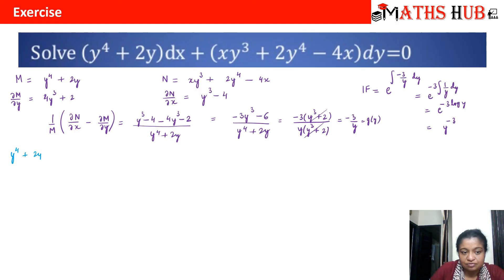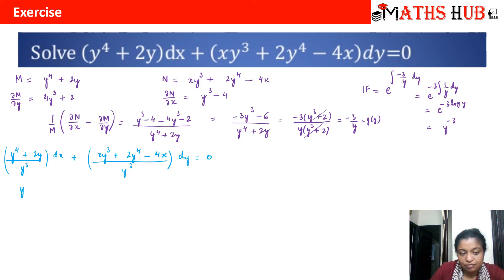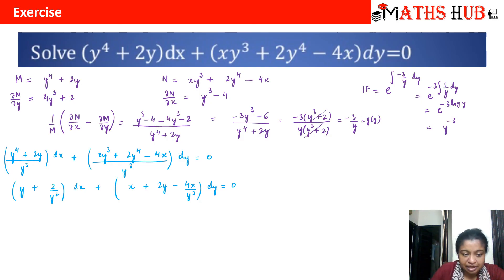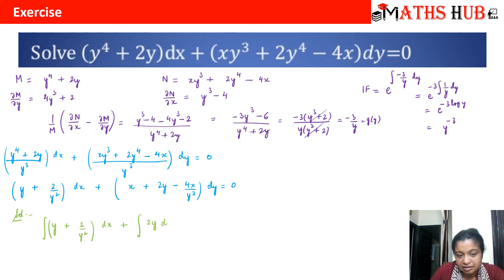Now let's multiply y^(−3) with the non-exact equation. We get (y⁴ + 2y)/y³ dx + (xy³ + 2y⁴ − 4x)/y³ dy = 0, which simplifies to (y + 2/y²) dx + (x + 2y − 4x/y³) dy = 0. The solution is ∫(y + 2/y²) dx plus terms of N not containing x. Since x and 4x/y³ contain x, we keep only 2y dy = c.